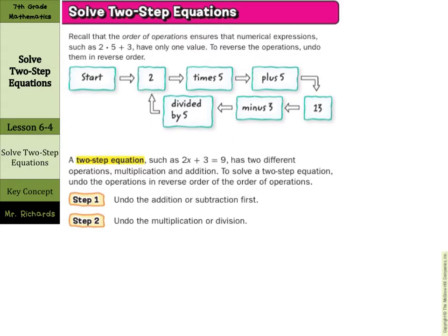Now in order to solve two-step equations, recall that the order of operations ensures that numerical expressions such as 2 times 5 plus 3 have only one value. To reverse the operations, undo them in reverse order. In the real-world link, we subtracted, then we divided. Kind of like the reverse order here. A two-step equation such as 2x plus 3 equals 9 has two different operations: multiplication and addition. To solve a two-step equation, undo the operations in reverse order of the order of operations. So we're actually going to undo the addition or subtraction first. Then we'll undo the multiplication or division.